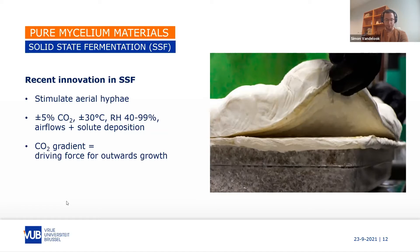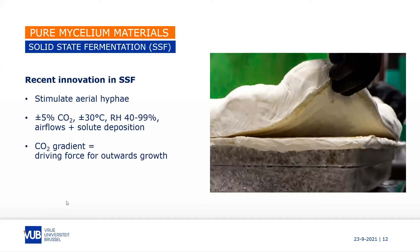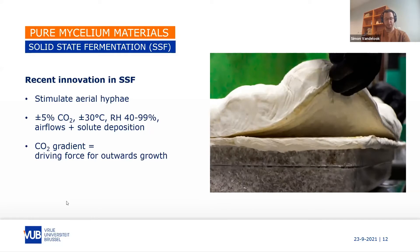These solid state fermentation conditions are usually around 30 degrees Celsius, about 5% gaseous CO2 concentration, high relative humidity, and airflows that deposit solutes on top of the mycelium. The driving force behind the outward growth of the mycelium is supposedly due to the CO2 gradient created by cellular respiration in the substrate container, combined with the already high CO2 concentrations in the growth chamber.